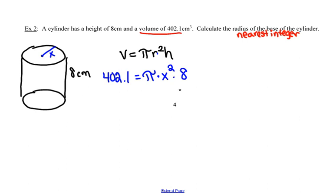And on the right side of the formula, recall that multiplication is a commutative operation. That is, I can change the order around and not change my answer. So instead of making this pi times x squared times h, I'm going to instead rewrite this as 8 times pi times x squared.